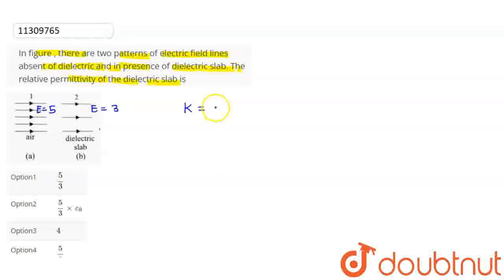Relative permittivity K is the ratio of the electric field in vacuum to the electric field in any medium. So K equals E vacuum divided by E medium. This is vacuum where E is 5, and in medium E is 3. So the answer is 5 by 3. Option number 1 is correct.